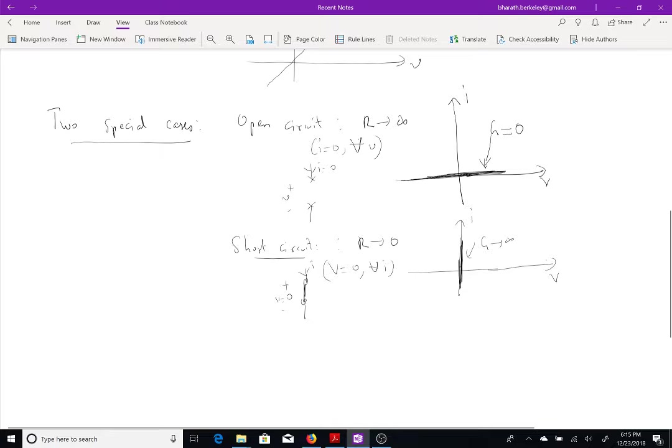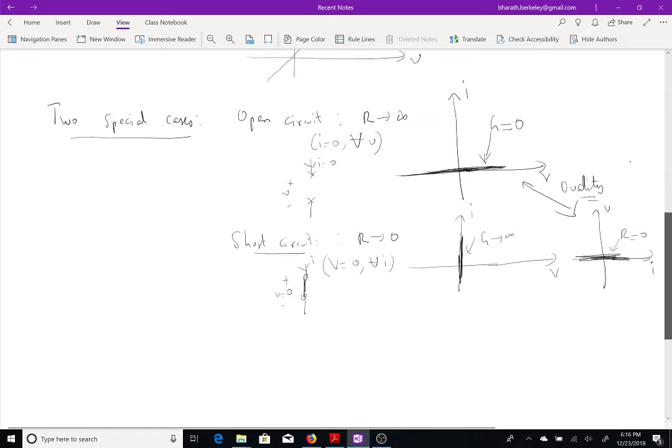So, I just mentioned the word dual, that means, if you, basically, if you plot, for example, the short circuit in the IV plane, the slope is resistance, so this goes to 0, you can notice that these are the same, that is, the graph of the open circuit in the VI plane is the same as the graph of the short circuit in the IV plane. So, this is the idea behind duality, it's an important idea, and we'll encounter this throughout the book. These are two special cases of linear resistors.